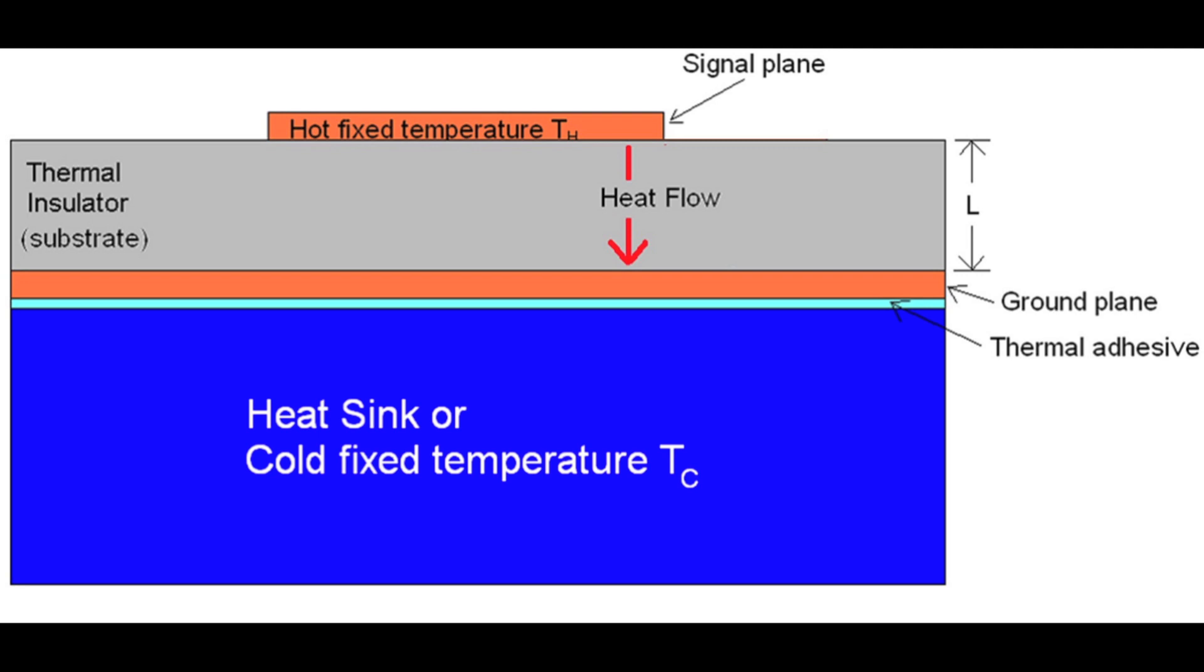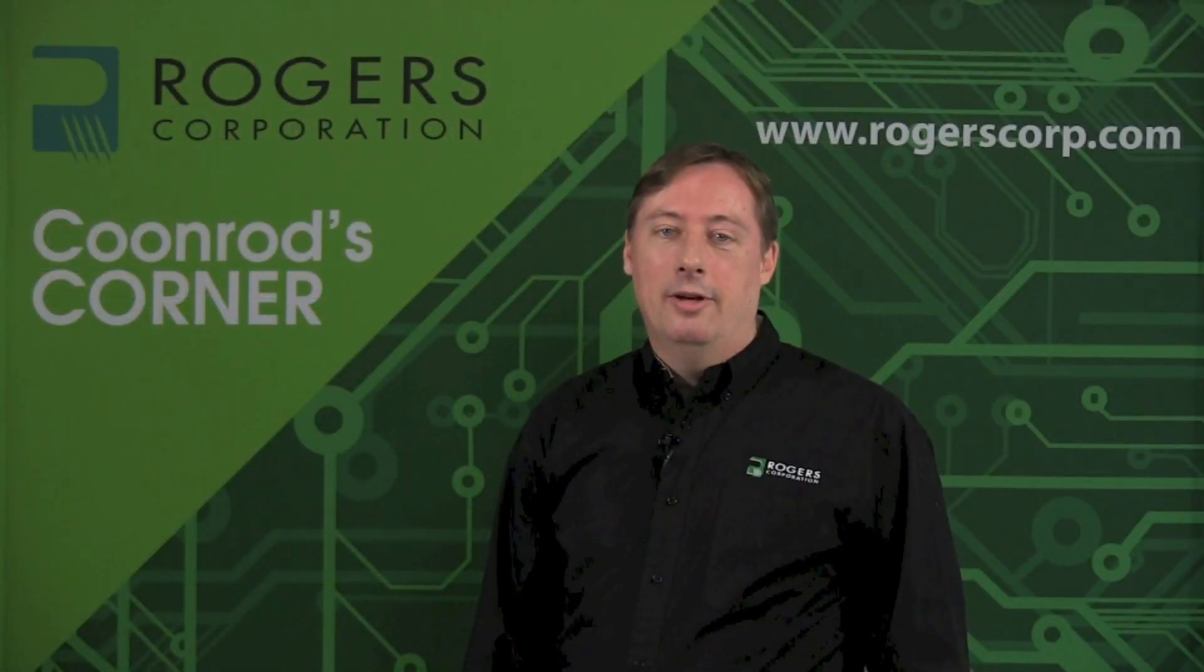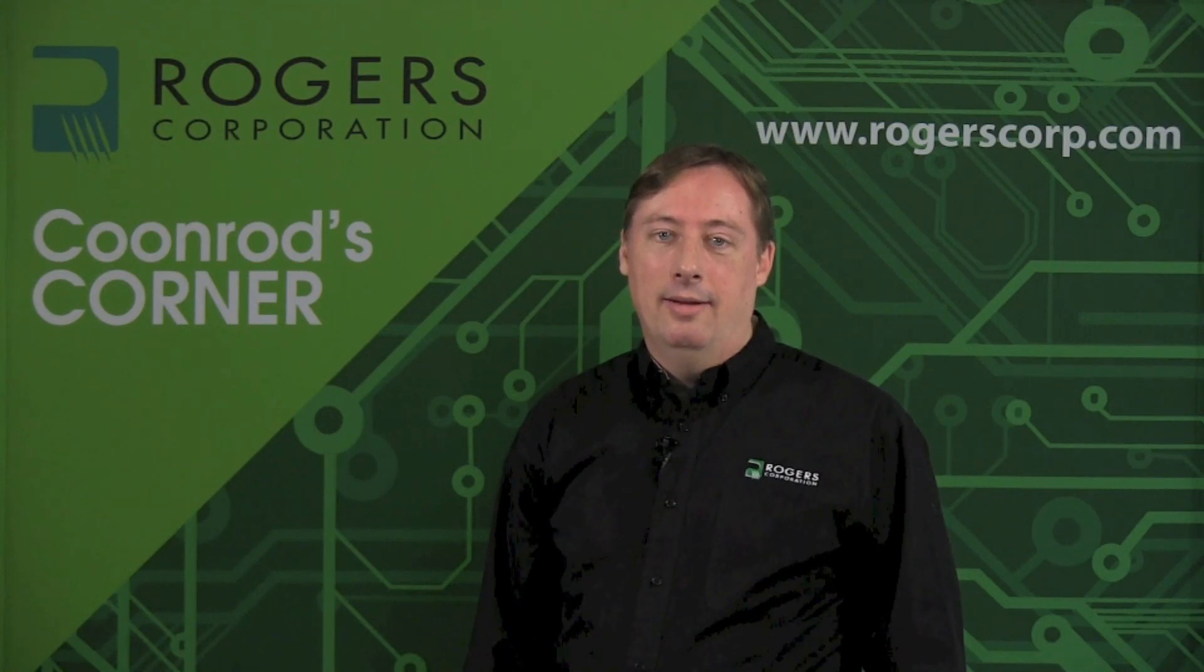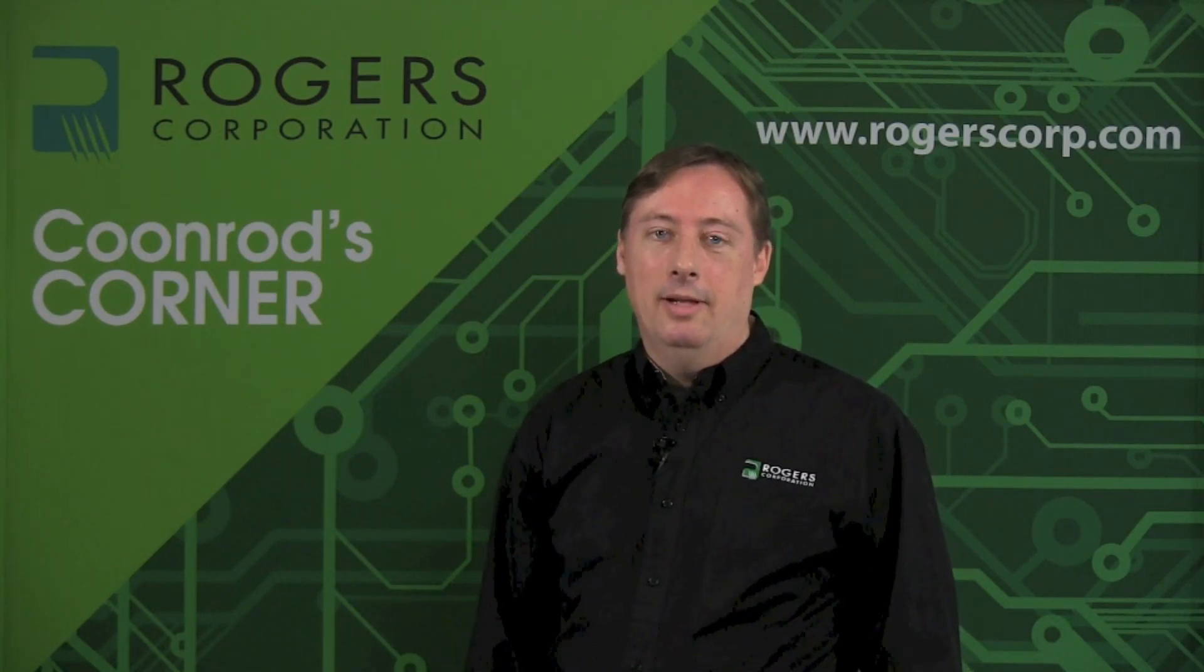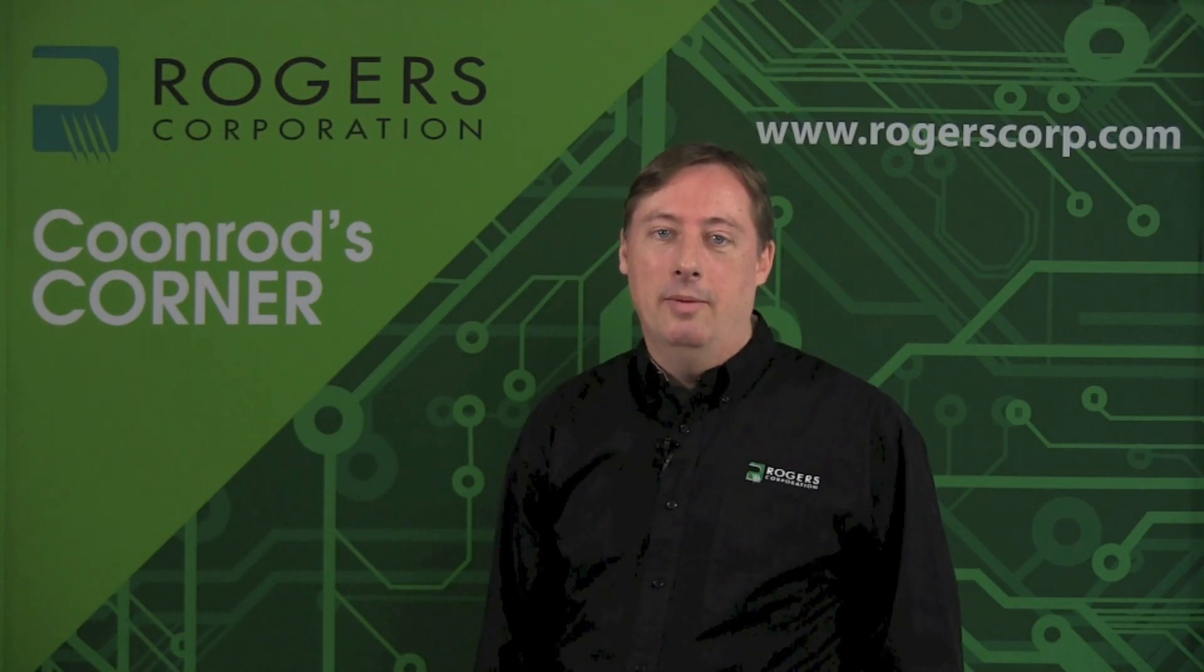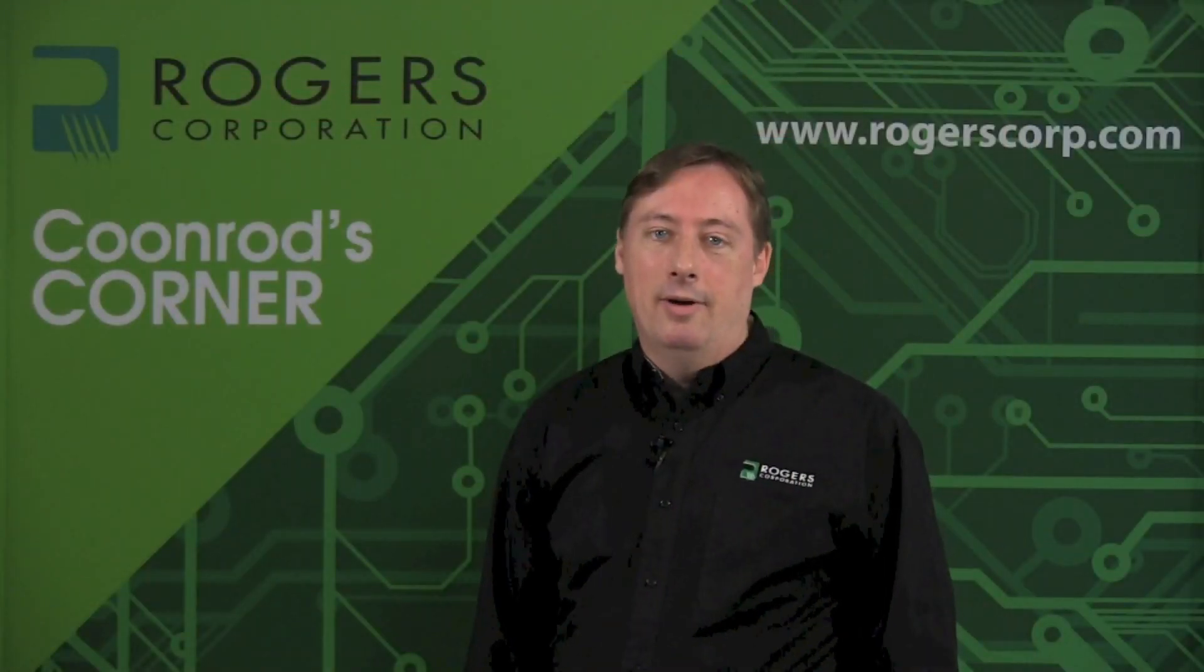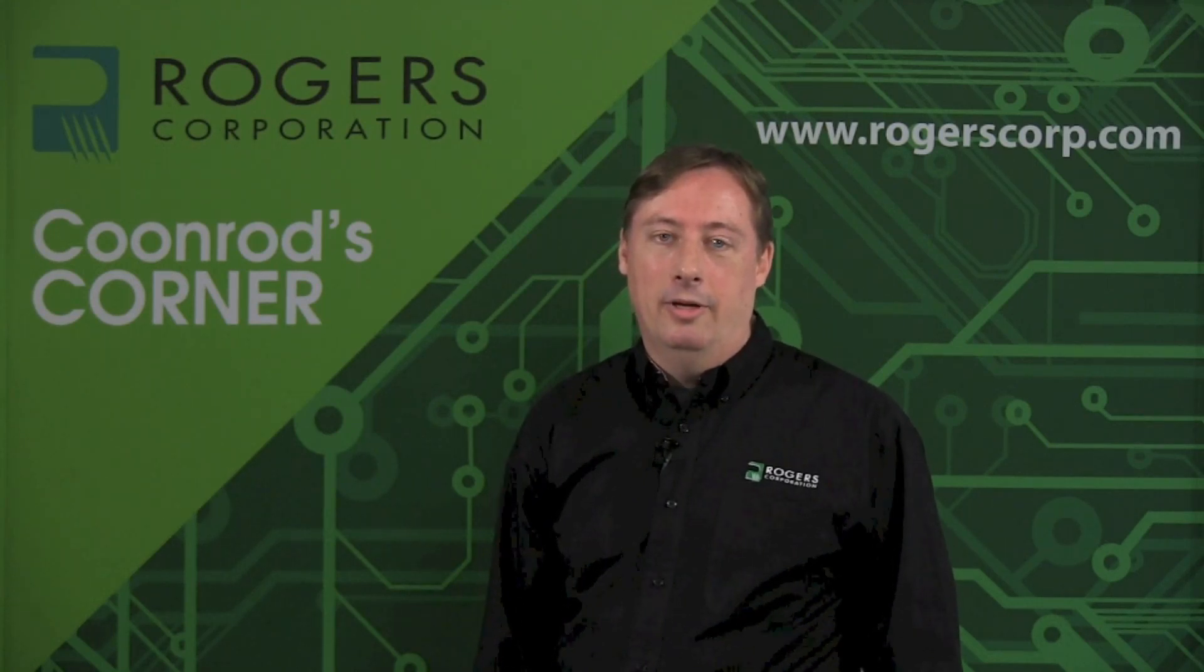Most substrates in the printed circuit board industry are thermal insulators and typically have thermal conductivity values in the range of about 0.2 to 0.3 watts per meter per K. As a reference, copper, which is a very good thermal conductor, has a value of about 400. We do have at Rogers some materials that are much higher in thermal conductivity.